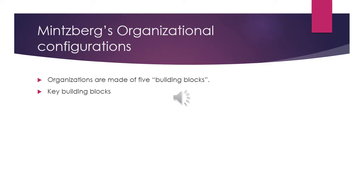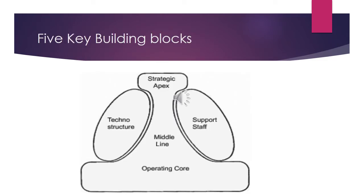This diagram explains those five key building blocks. At the very top you can see the strategic apex, in the middle is the middle line, at the bottom is the operating core, on the right side we have support staff, and on the left side techno structure.